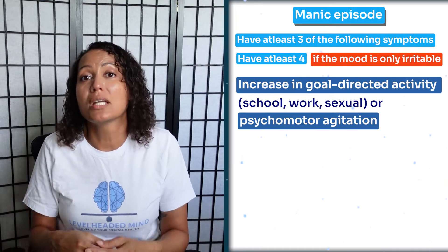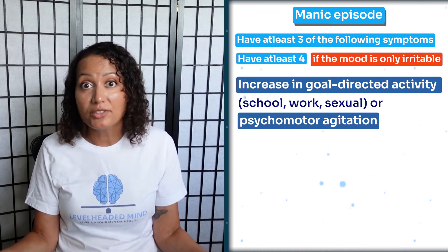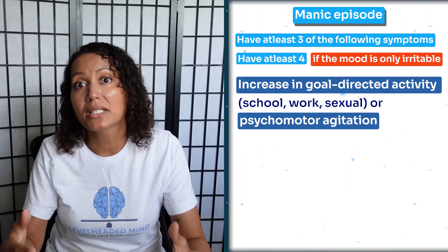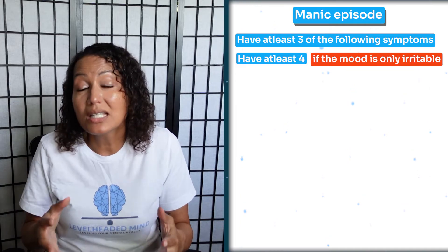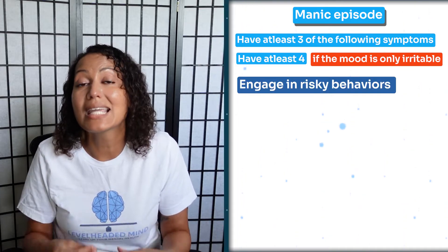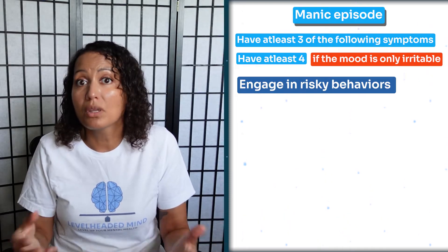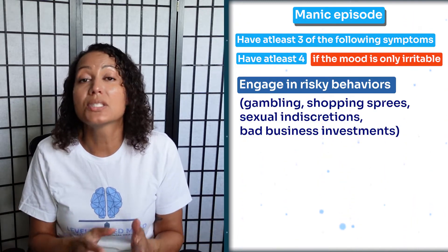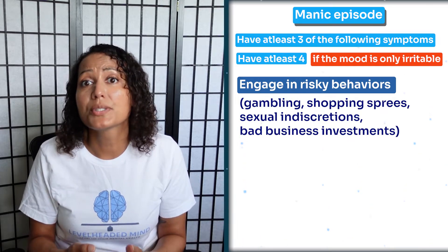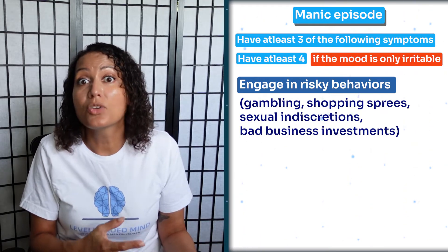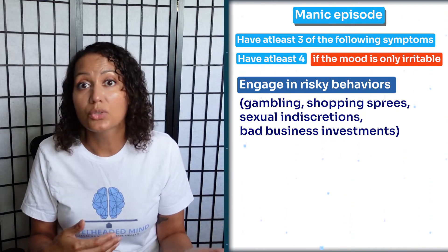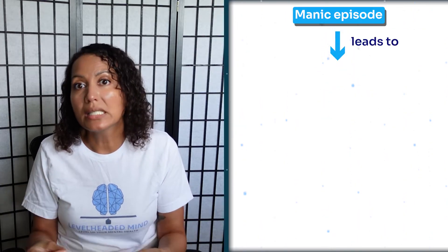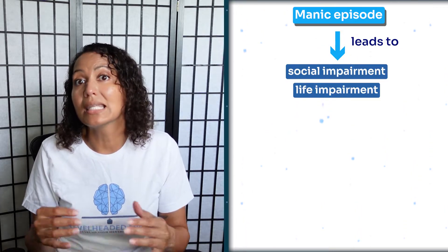They'll direct this energy into projects, start a business they have no knowledge about, and spend a lot — or all — of their money in a bad investment on this goal-directed activity, which can lead to the next symptom: engaging in risky behaviors. These risky behaviors could be bad investments, gambling, throwing away hard-earned money, substance abuse, and promiscuous behaviors — which, if married, could mean being unfaithful to their partner.